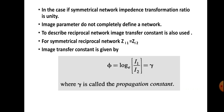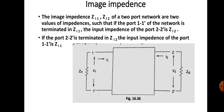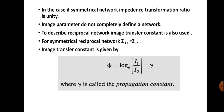In the case of a symmetrical network, the impedance transformation results in ZL itself because both image impedances are equal, so the impedance transformation ratio becomes 1. Image parameters are sufficient to completely describe a symmetrical network. However, for different types of networks such as reciprocal networks, image parameters alone are not sufficient, and we need another parameter called the image transfer constant, represented by phi.